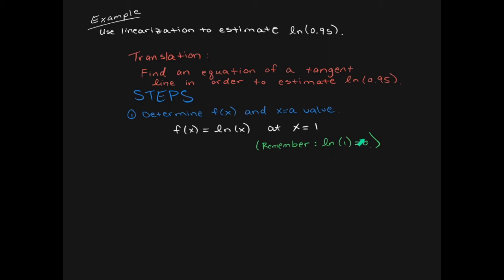You want to look at 0.95 and ask yourself: what's a number that's very close to 0.95, but easy to take the ln of? The answer is x equals 1. ln of 1 is equal to 0 — that's a value everyone should know. So ln of 0.95 should be pretty close to ln of 1. That's how you determine the a value, and these are steps you'll have to do yourself on an exam or homework.